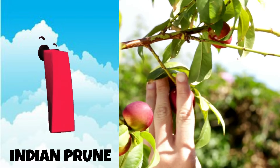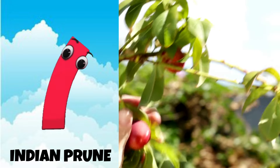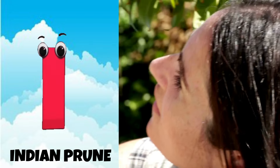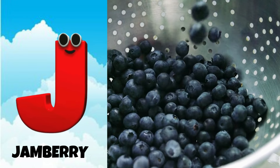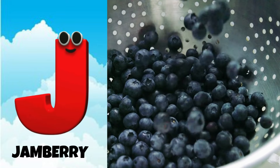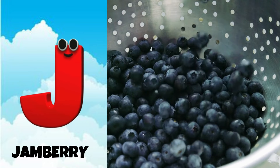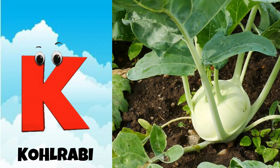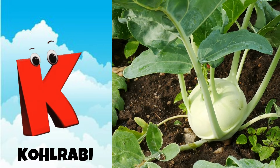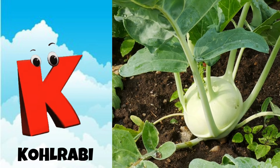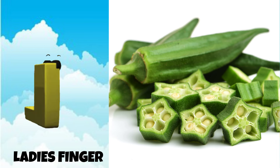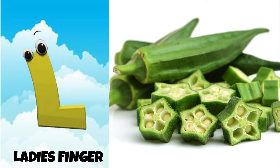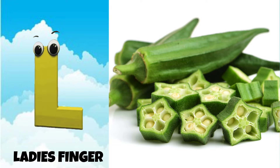I is for Indian prune, eh, eh, Indian prune. J is for jamberry, juh, juh, jamberry. K is for kohlrabi, kuh, kuh, kohlrabi. L is for lady's finger, luh, luh, lady's finger.